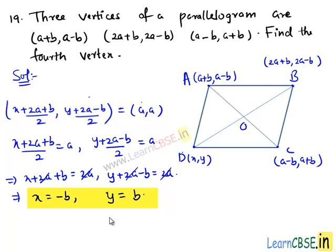Hence, the fourth vertex D has the coordinates (-b, +b).